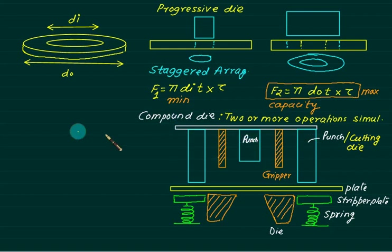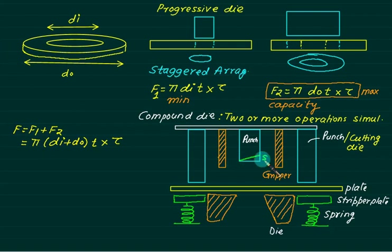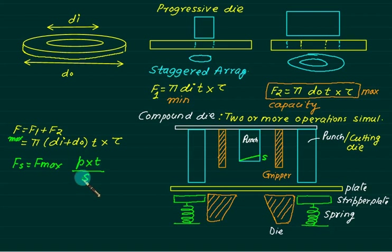Since both operations are done simultaneously in a compound die, total force = F1 + F2. If shear is provided, and S >> p×t, we use Fs = F_max × p × t / S for quick calculation. In a progressive die, operations are done in progression, one after another, requiring less force per stroke.